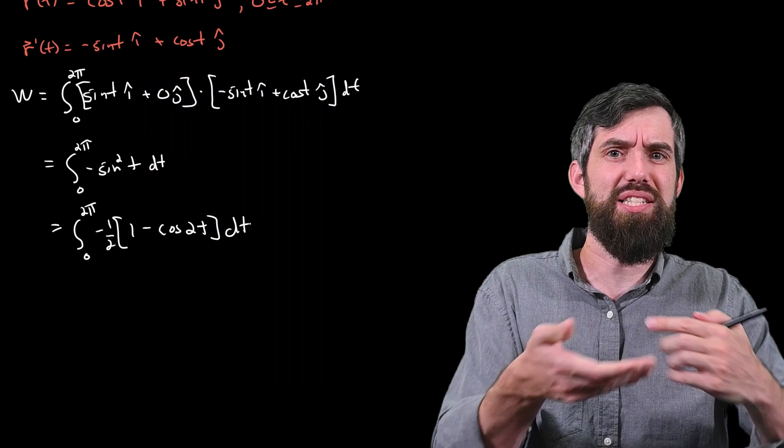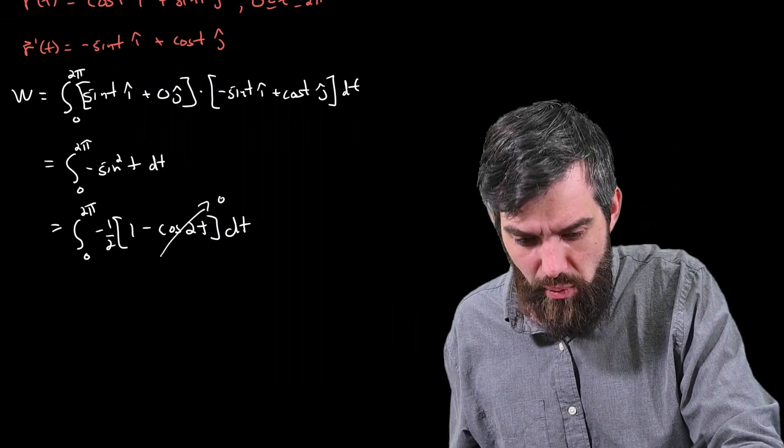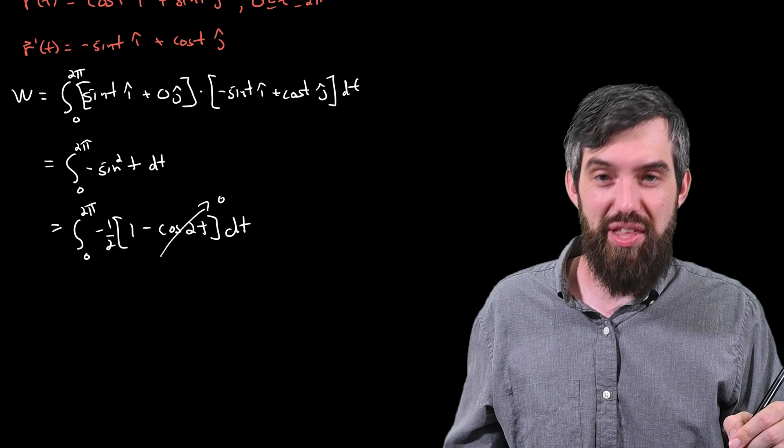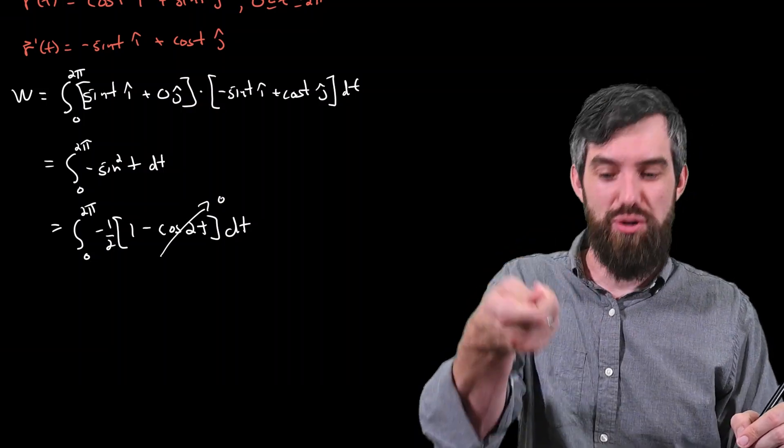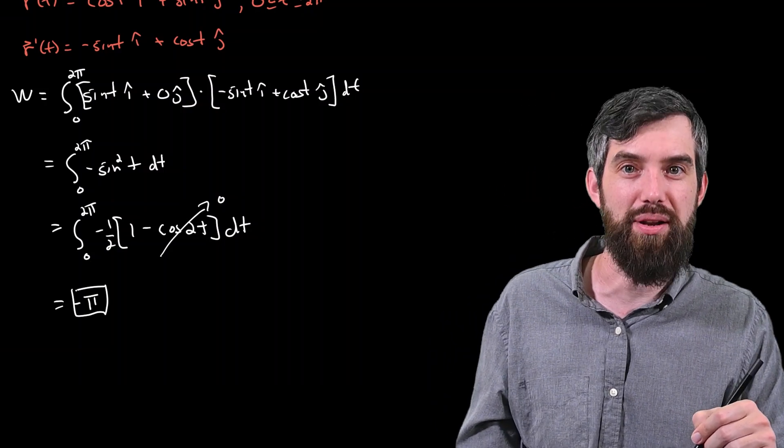The cos(2t) term, because it's being integrated over its period, is just going to be equal to 0, one of our nice little tricks. The -½, integrated between 0 and 2π, is just going to give us the value of -π. And so that is the work done final answer.